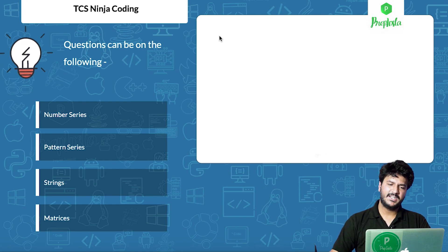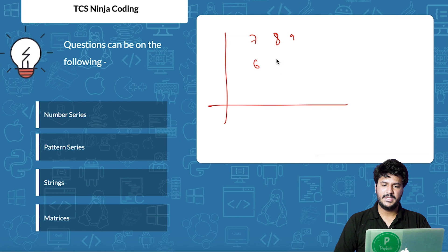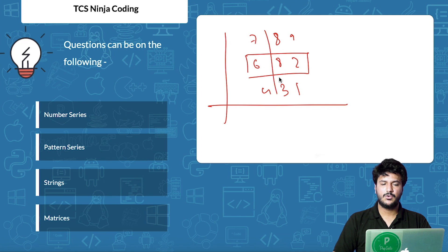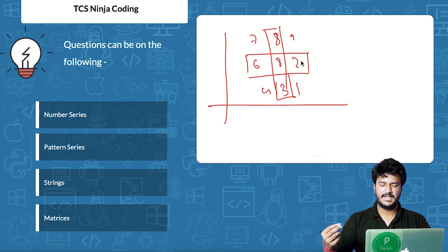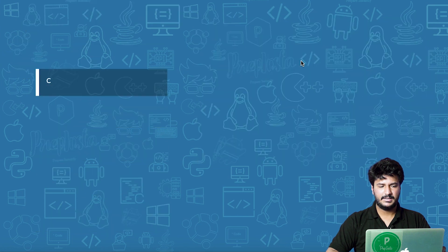Matrices could also be asked — you take a matrix as input, for example 7 9 8 / 6 8 2 / 4 3 1, and then find the row with the maximum sum, or the column with the maximum sum, or both together. These are the kinds of questions they can ask, so let's begin with the video.